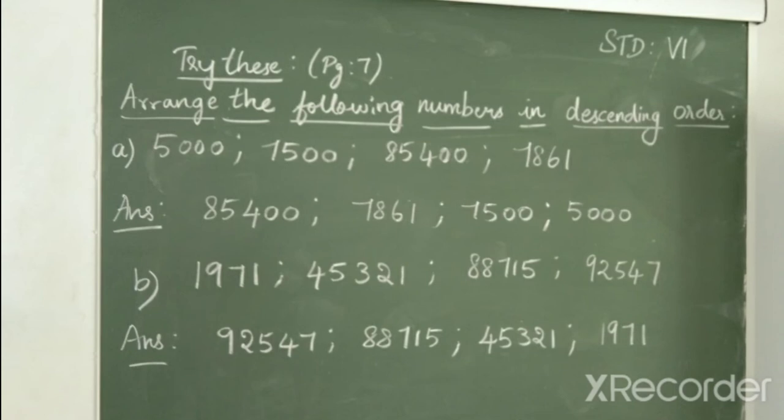Then, among the 3 four-digit numbers, which is the greatest? 7861. So, 7861, and then comes 7500 and 5000.